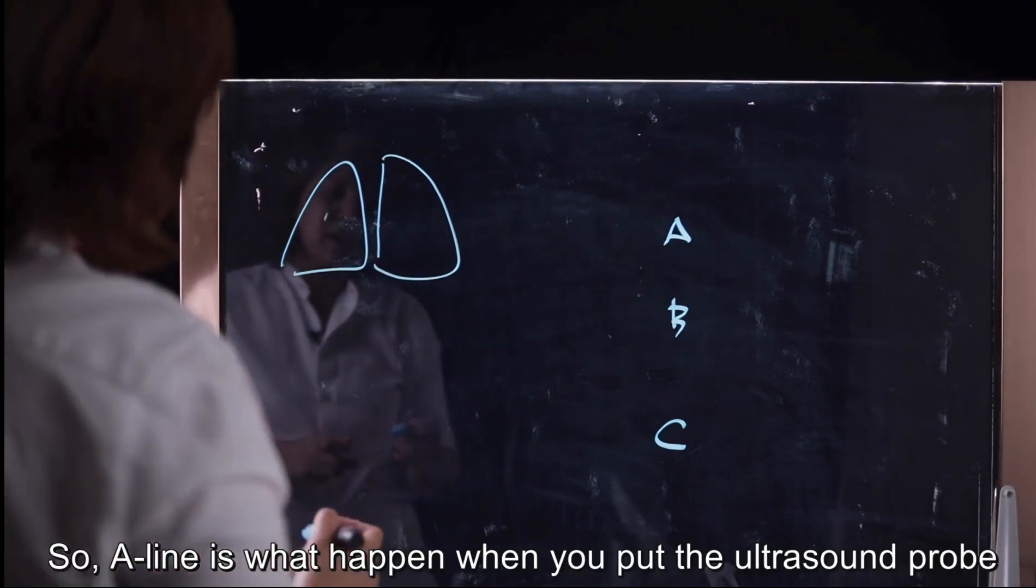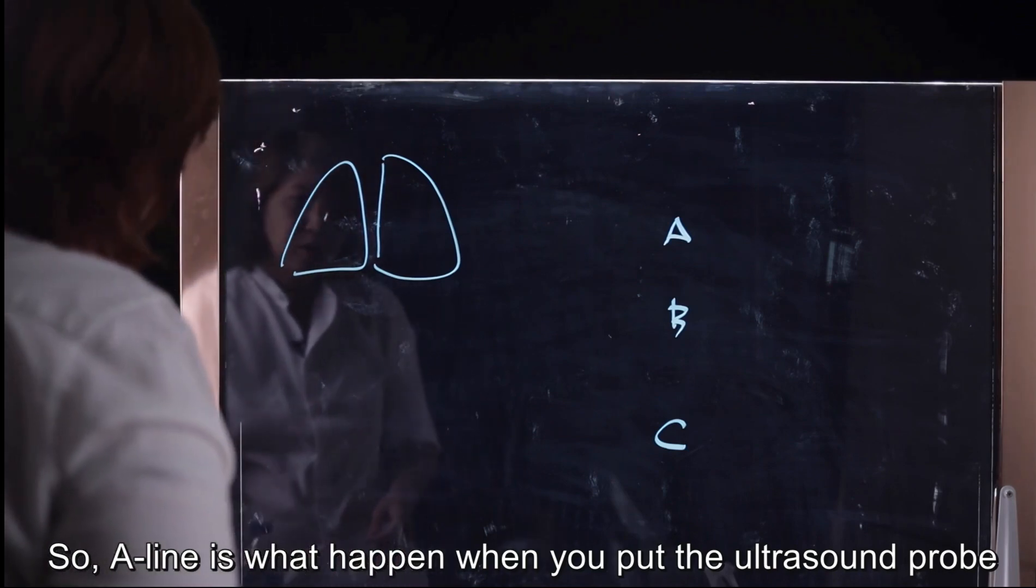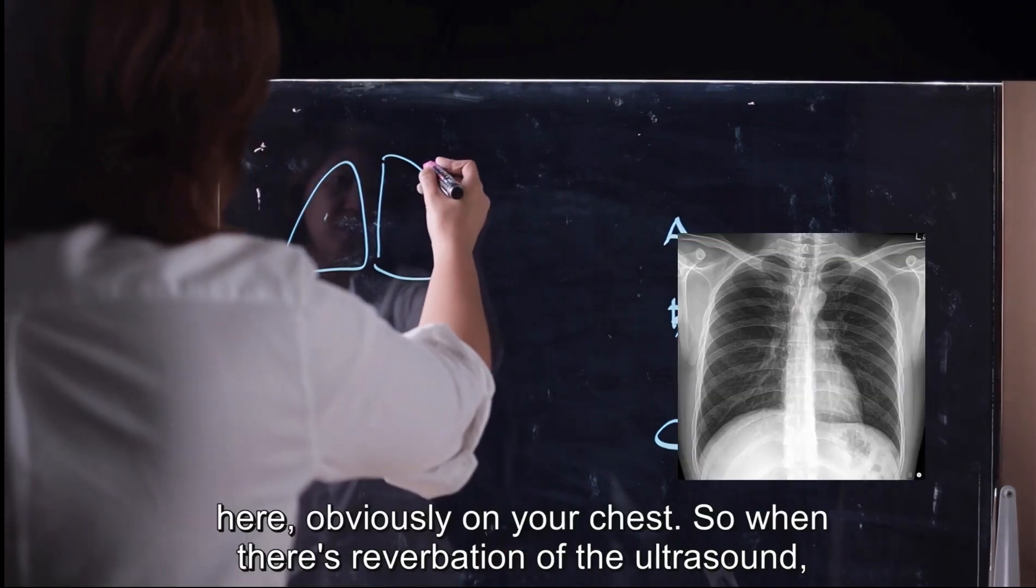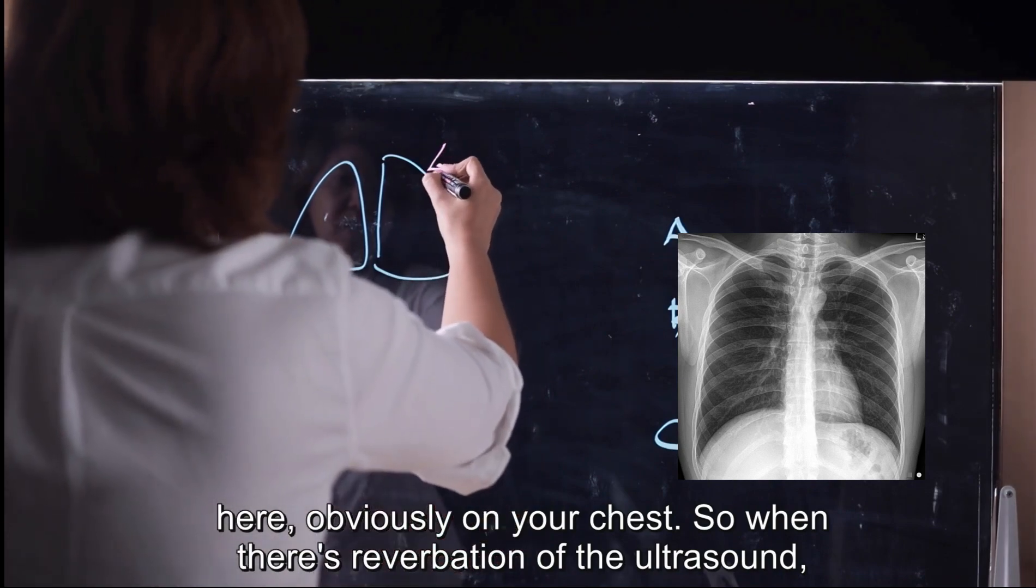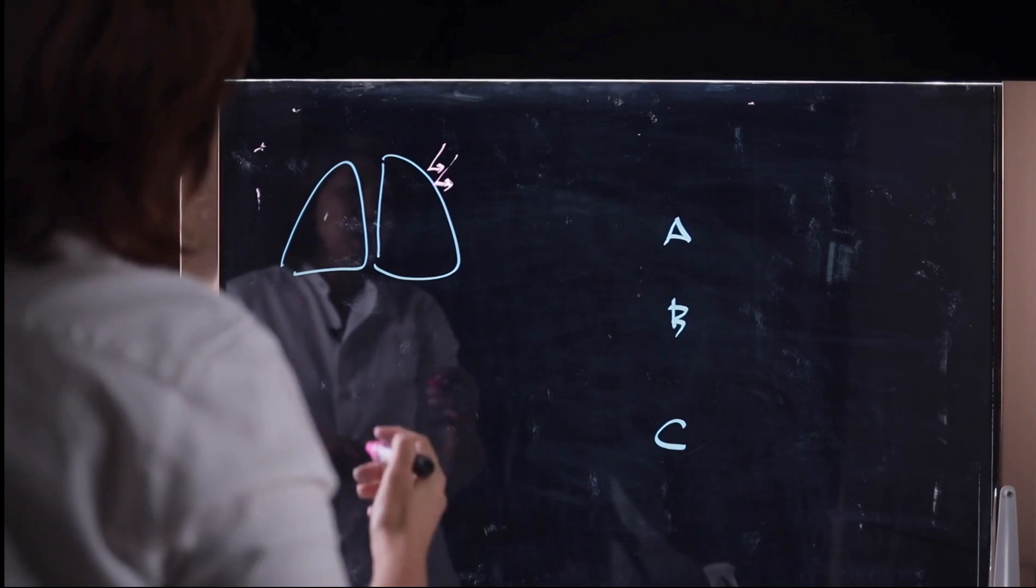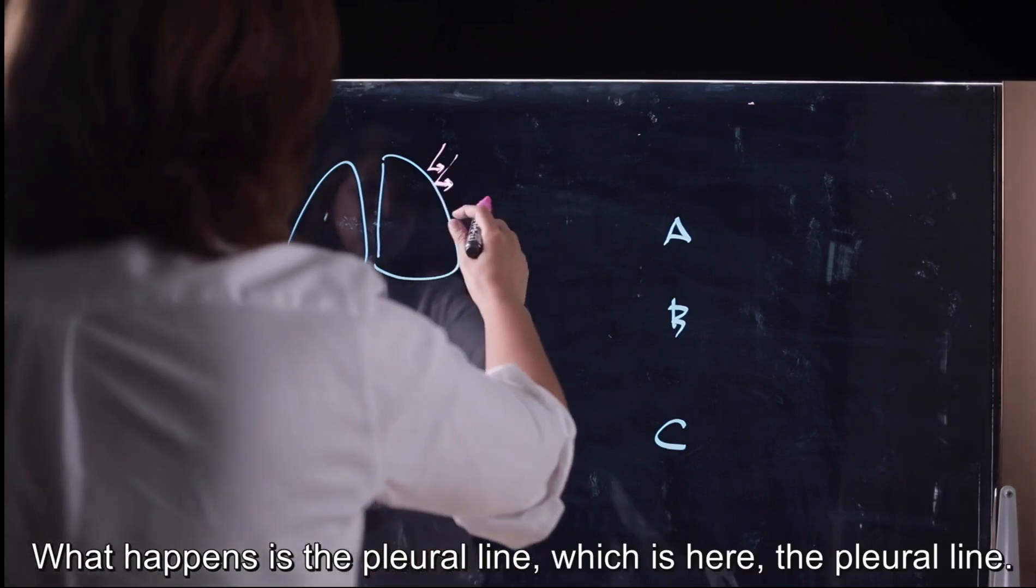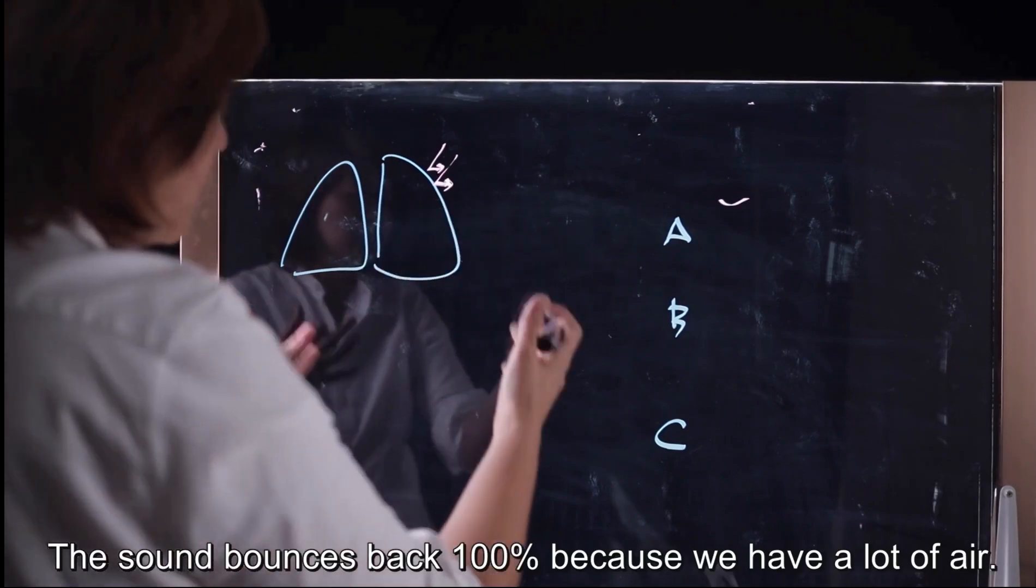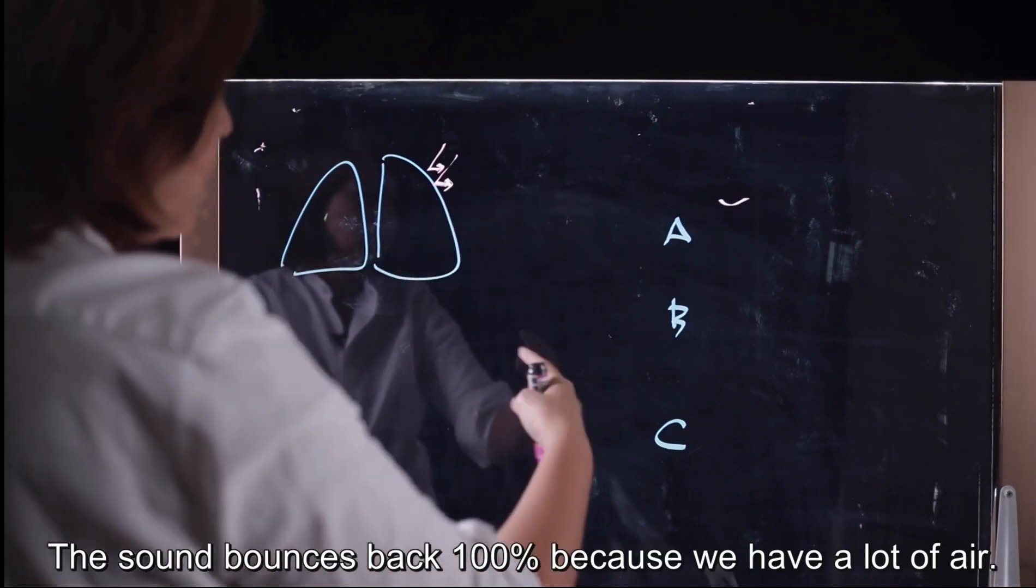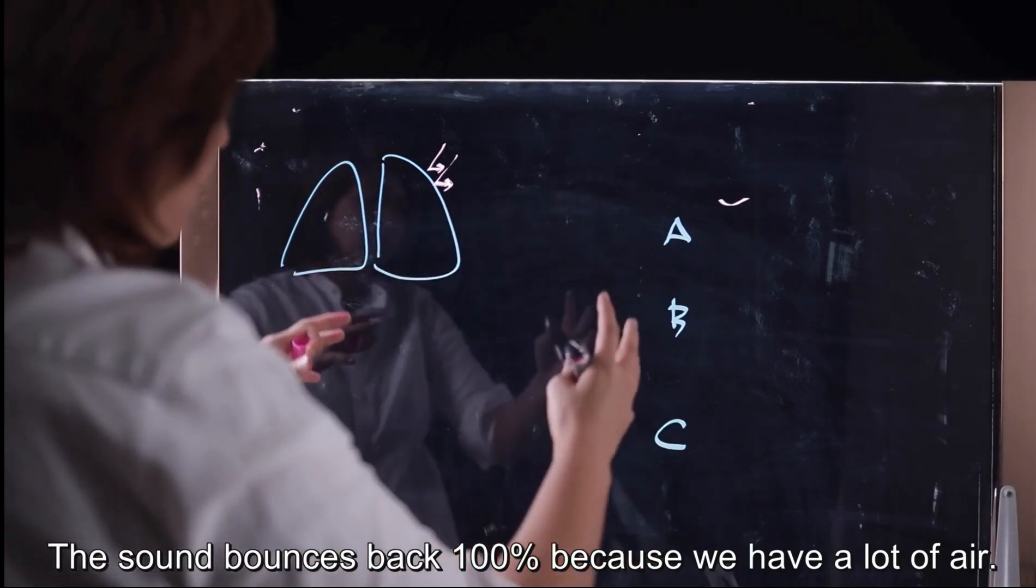So A-line is what happens when you put the ultrasound probe here, obviously on your chest. So when there is reverberation of the ultrasound, what happens is the pleural line, which is here, this is the pleural line, will get mirrored because the sound bounces back 100% because you have a lot of air.